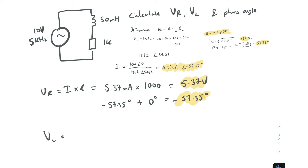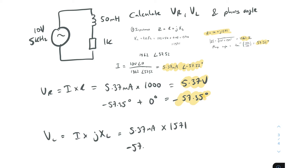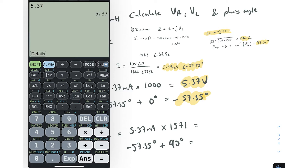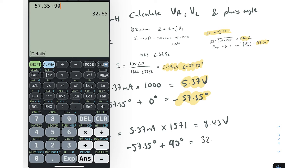For the inductor, VL = I × jXL = 5.37mA × 1571Ω. The inductor adds a 90° phase shift, so the angle is −57.35° + 90° = +32.65°. The magnitude is 5.37mA × 1571 / 1000 = 8.43 volts. So VL = 8.43 volts at 32.65°.